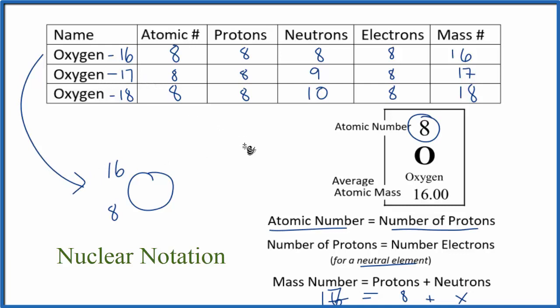If we wanted to do oxygen-17, we'd put the mass number here, and of course it's always 8, the atomic number, that's oxygen-17.